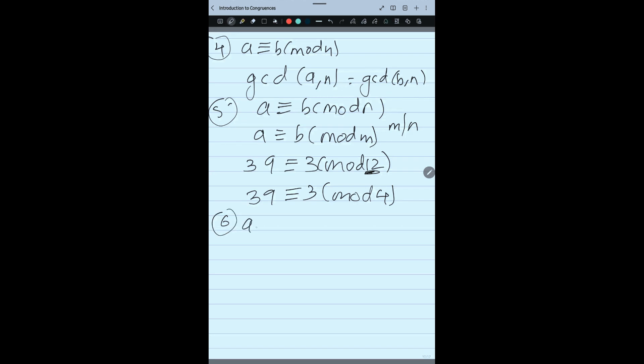The next property is, if you have A congruent B mod M and A congruent B mod N, suppose you have these two, also given that GCD of M and N is 1, then I can write A congruent B mod MN.